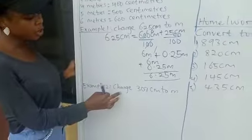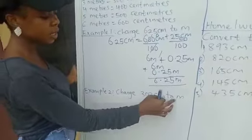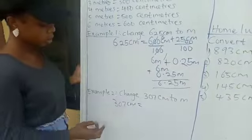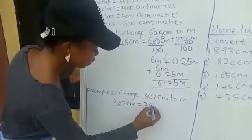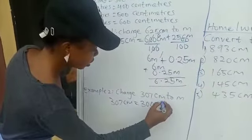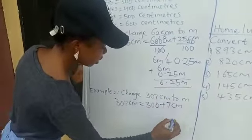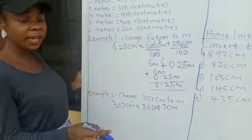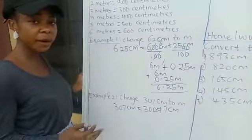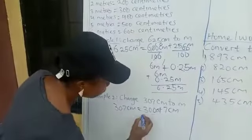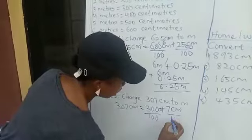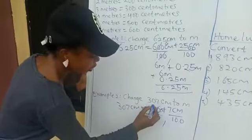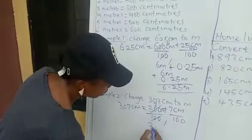Example 2. We want to change 307 centimeters to meters. Let's split this: 300 plus 7 centimeters. I told you earlier that if you want to convert from centimeters to meters, you divide by 100. So, divided by 100. 100 in 100 is 1; 100 in 300 is 3. That's 3 meters.